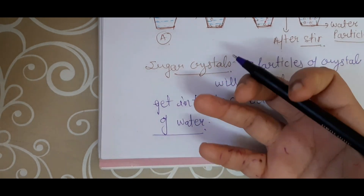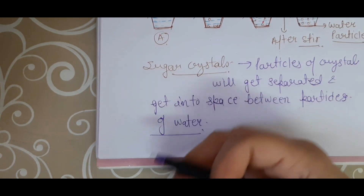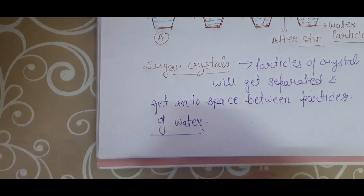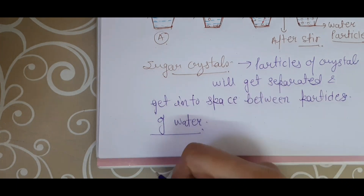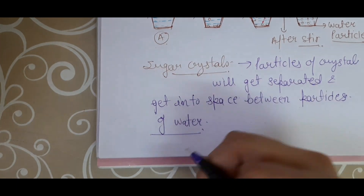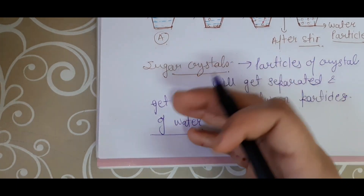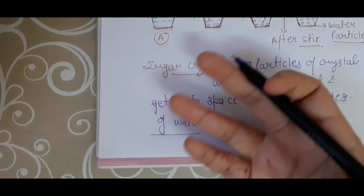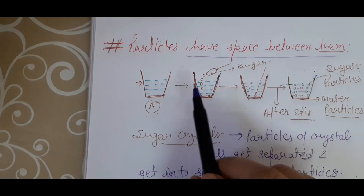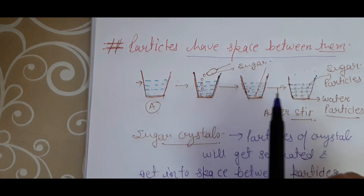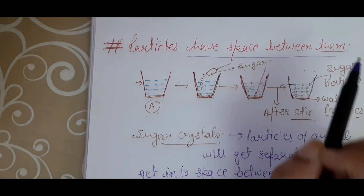This question is often asked: when we dissolve sugar in water, why does the volume of water not increase or remain the same? Because the particles have space between them, and the sugar particles get into the space between the particles of water. You can take many examples, like making sugar solution, salt solution, lemonade, tea, or coffee. There are many examples including juices. That is the first characteristic.